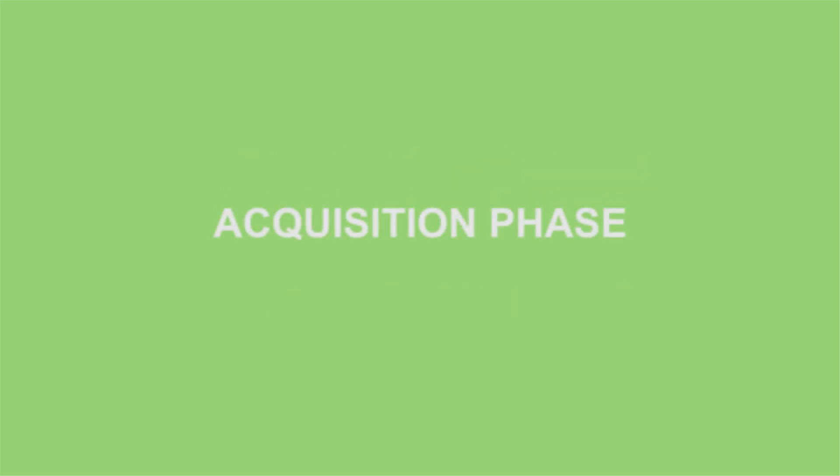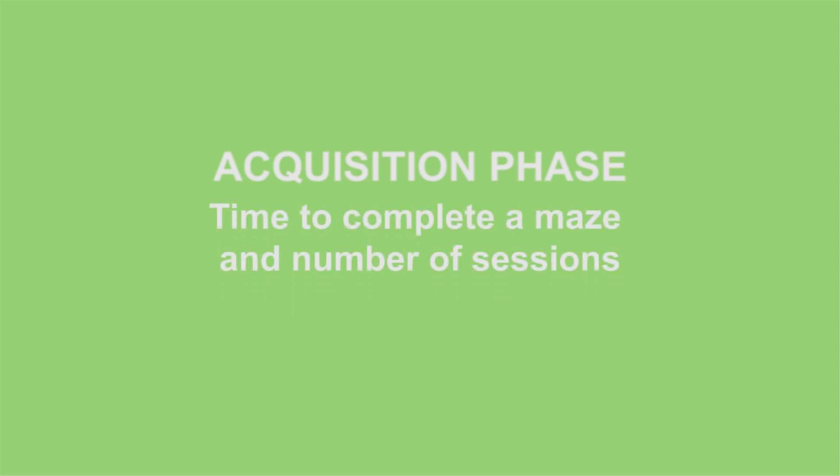In the acquisition phase, the primary measures of performance are time to complete a maze and number of sessions. While in the testing phase, the emphasis is on the number of errors made as the primary measure of performance in terms of spatial learning.